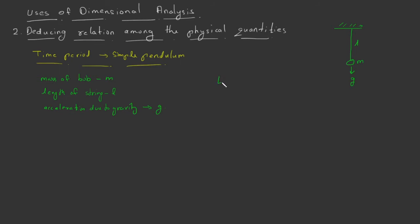We write the time period of a simple pendulum as proportional to length with the power a, m with the power b, and g with the power c. Or we can write t is equal to a constant k into l raised to a, m raised to b, and g raised to c.